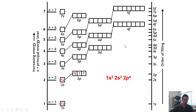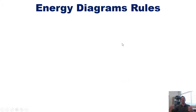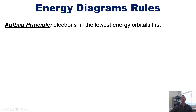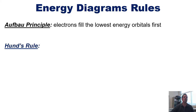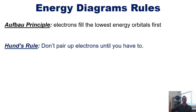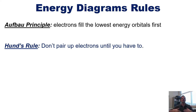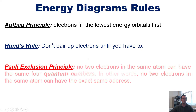There are three principles for orbital energy diagrams. First, the Aufbau principle: electrons fill the lowest energy orbitals first — we start filling from the bottom up. Second, Hund's rule: electrons don't pair up until they have to — in real life, electrons won't share an orbital until there's no other option. Third, the Pauli exclusion principle: no two electrons in the same atom can have the same four quantum numbers.